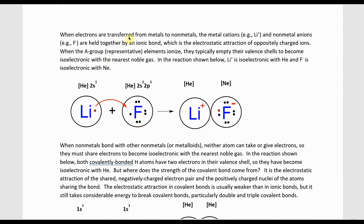When electrons are transferred from metals to nonmetals, the metal cations — such as lithium — and nonmetal anions — such as fluoride — are held together by an ionic bond, which is actually the electrostatic attraction of oppositely charged ions. When group A metals react with nonmetals, the metals typically empty the valence shells and the nonmetals fill them, both becoming isoelectronic with the nearest noble gas. In this case, lithium cation is isoelectronic with helium, and fluoride anion is isoelectronic with neon.